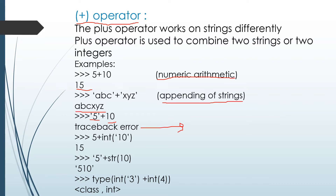For 5 + int('10'), even though '10' is given in string format, the type name int is applied outside, so it gives the integer output 15. With str('5') + str(10), string plus string gives another string, which is '510'. And for int('3') + 4, even though '3' is given as a string, the type name int is applied, so the output is the integer 7.